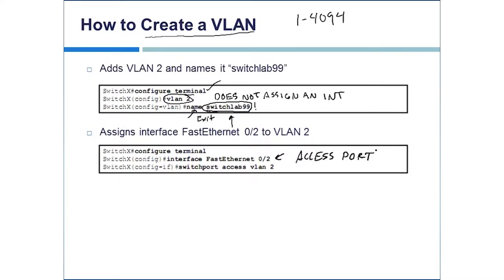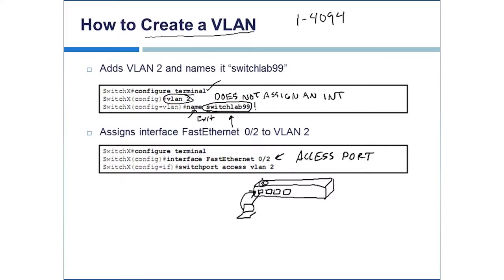An access port is the port that will place the VLAN tag on incoming frames and take the tag off before it leaves. The host doesn't understand what a VLAN tag is — it might actually read it as a bad frame. As frames come into the switch, the access port attaches the VLAN number to that frame so the switch can determine which ports it's allowed to transmit out of. If two or more ports are assigned to a single VLAN, traffic can leave any of those access ports assigned to the same VLAN, depending on the destination MAC address.